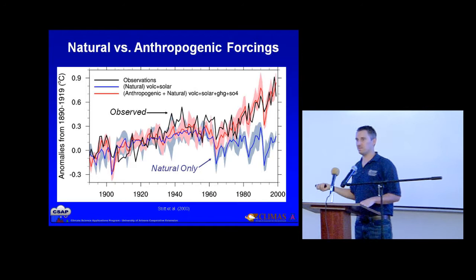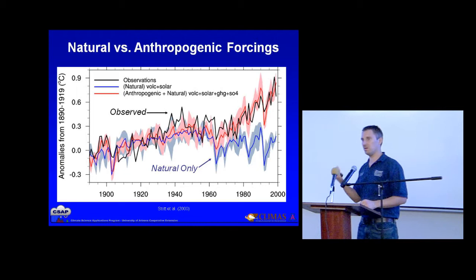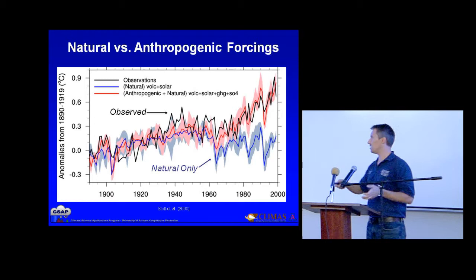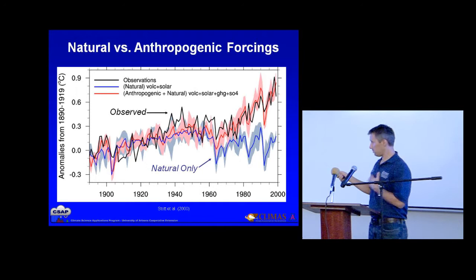The observations continue upward, the model without greenhouse gas changes stays flat, and the model with greenhouse gas changes matches the observations. So the model tells us that to get the story right with observational data, we have to have that extra radiative component in the atmosphere. This is weight of evidence — no single thing is deterministic on its own. It's about using all this information together to put together a story about how we think things work.